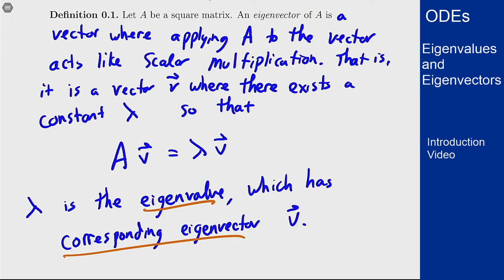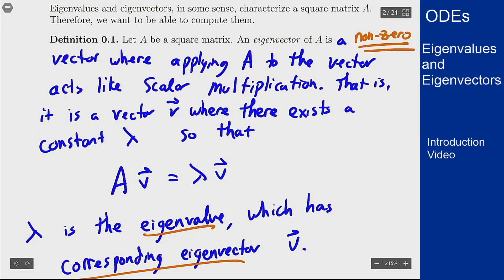Now you might say well this is easy, let me just take v to be zero then this works for every lambda. But the key thing is I want this to be a non-zero vector where this happens. Zero makes things too easy, I want to actually know what's going on here. It means I want to look at non-zero vectors that have this property.